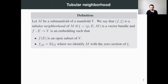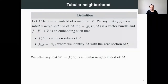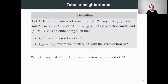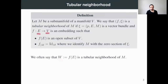In particular, what we get is that the map F between E and its image is a diffeomorphism. And we often say that W, the image of E, is a tubular neighborhood of M because W is just diffeomorphic to the total space of a vector bundle.